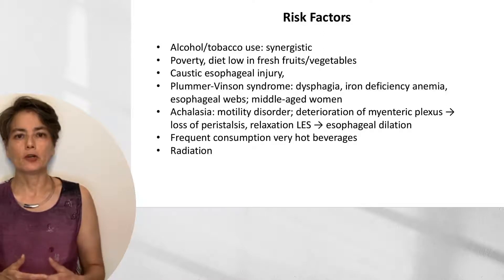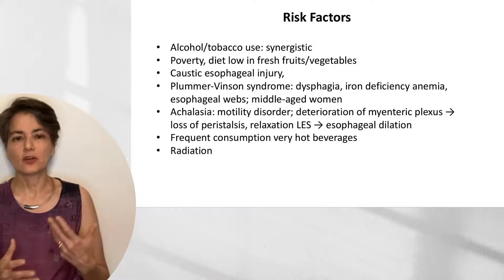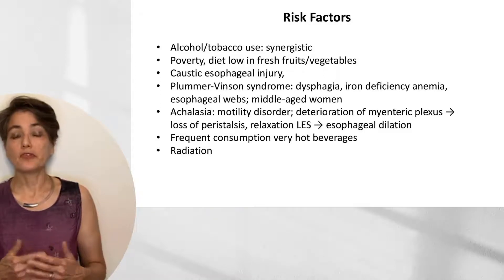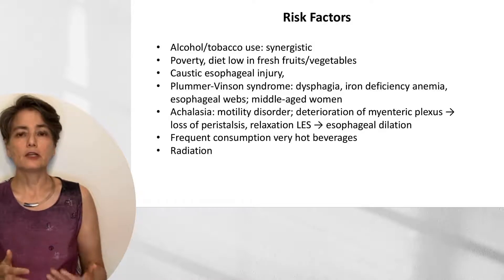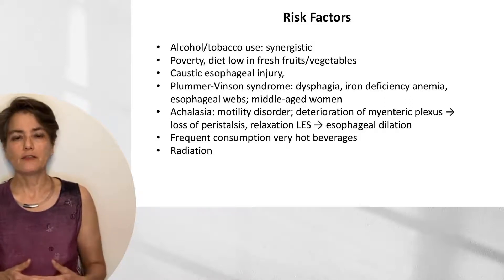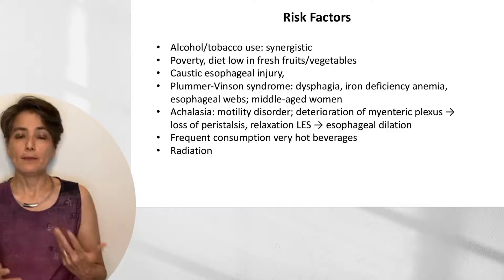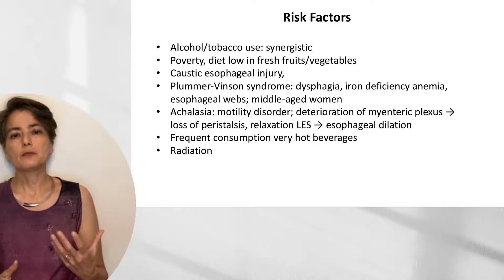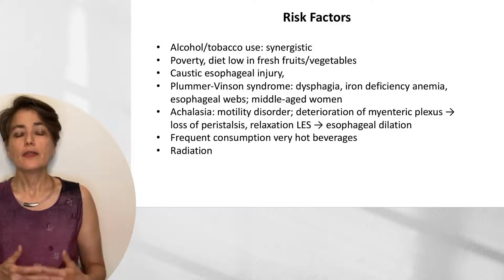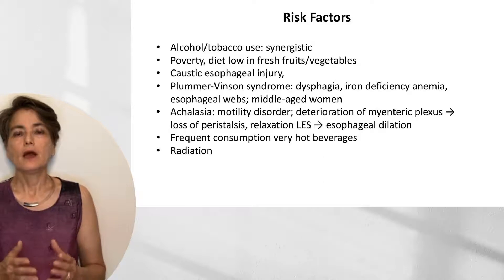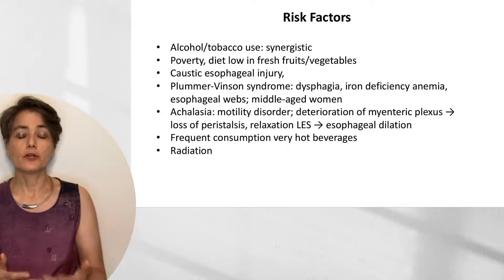Two important associated entities: Plummer-Vinson syndrome, characterized by a triad of dysphagia, iron deficiency anemia, and an esophageal web — tending to arise in middle-aged women with unknown pathogenesis. A barium swallow shows the esophageal web as a protrusion of mucosa at about 90 degrees to the underlying mucosa, with some dilation and a filling defect. Second is achalasia, a motility disorder due to deterioration of the myenteric plexus, causing loss of peristalsis and inability to relax the lower esophageal sphincter, leading to upstream dilation of the esophagus.